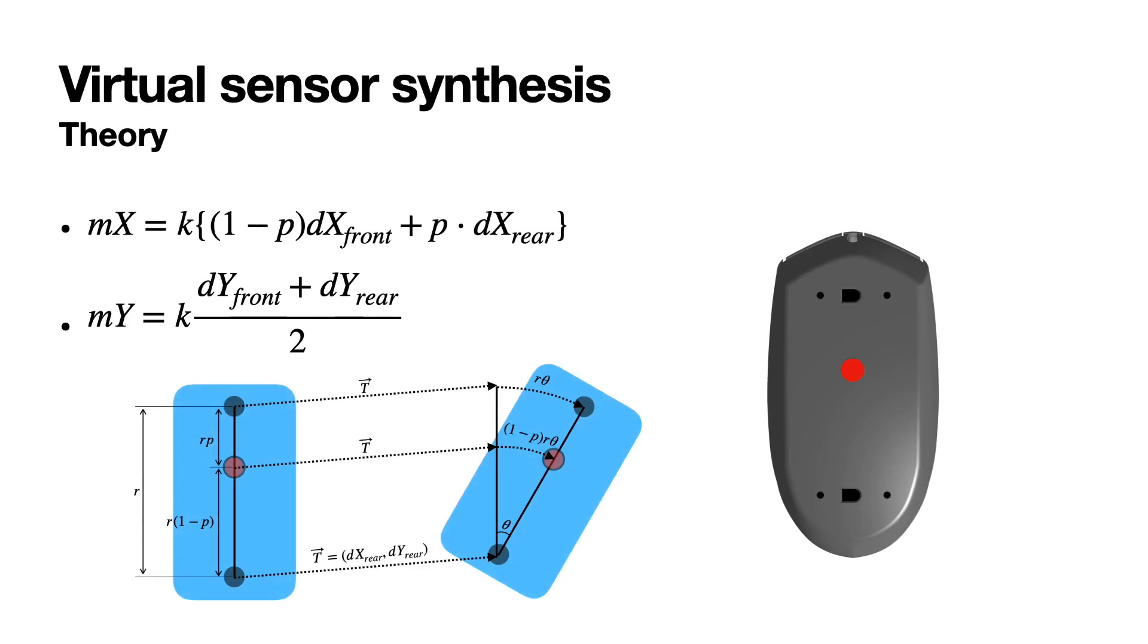To synthesize a virtual sensor, we established a mathematical model. First, we set the front sensor position to be the P0, or 0%, and the rear sensor position to P1.0, or 100%. And the virtual sensor signal is simply the weighted sum of two.